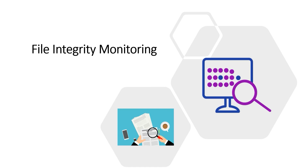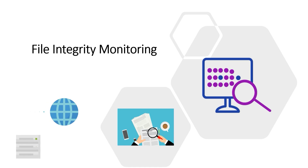File Integrity Monitoring, or FIM, is a technology that monitors files or blocks to detect if they are modified. In the event that a critical file or block is modified, the FIM solution will generate alerts and send those alerts to appropriate security personnel.